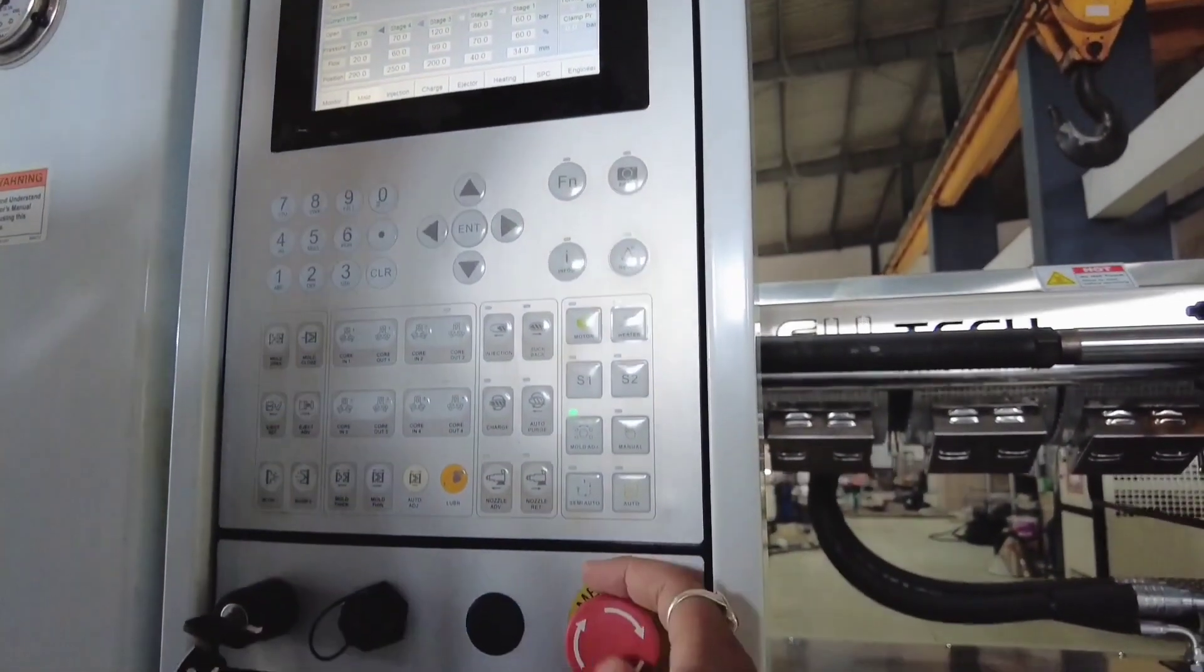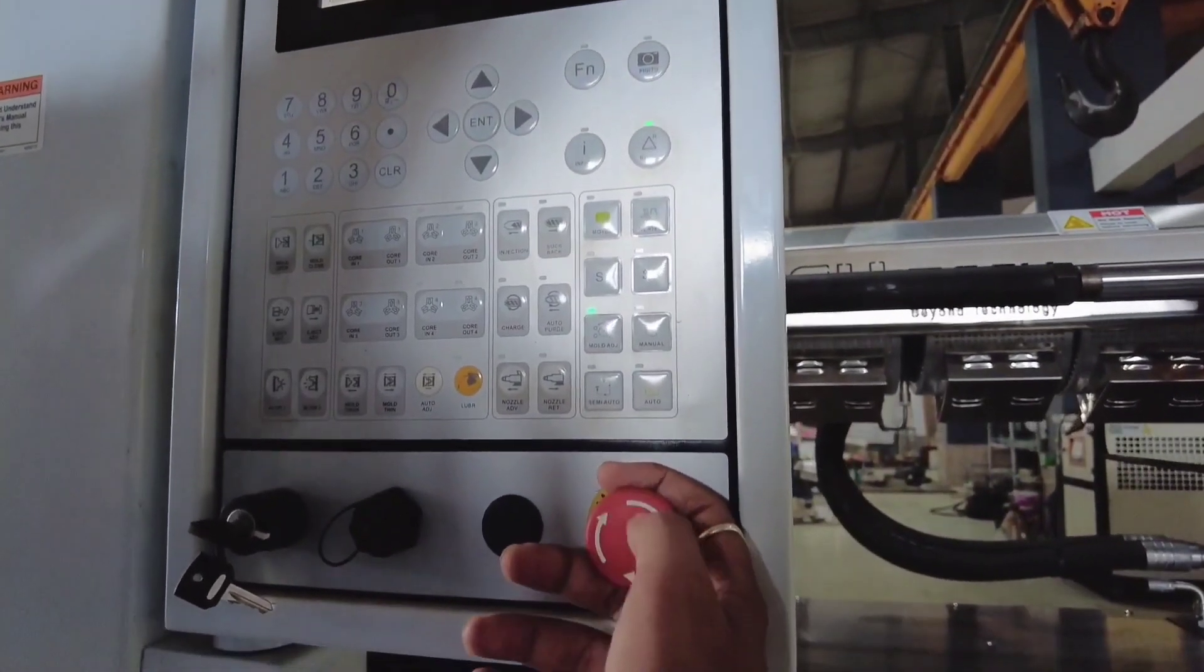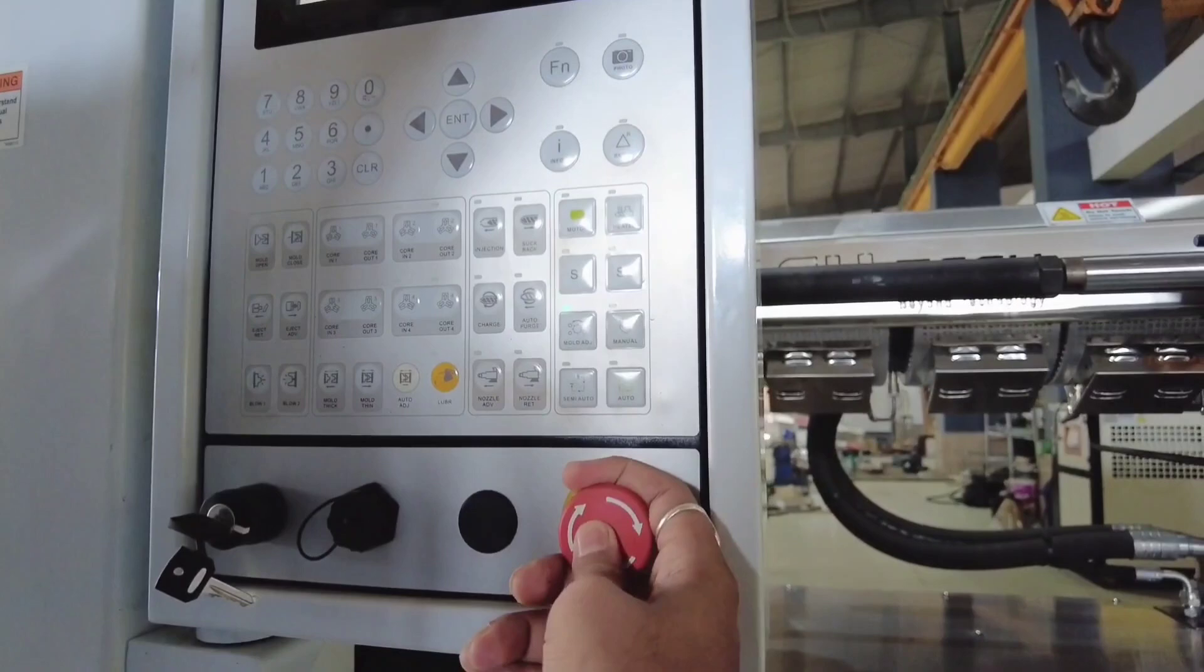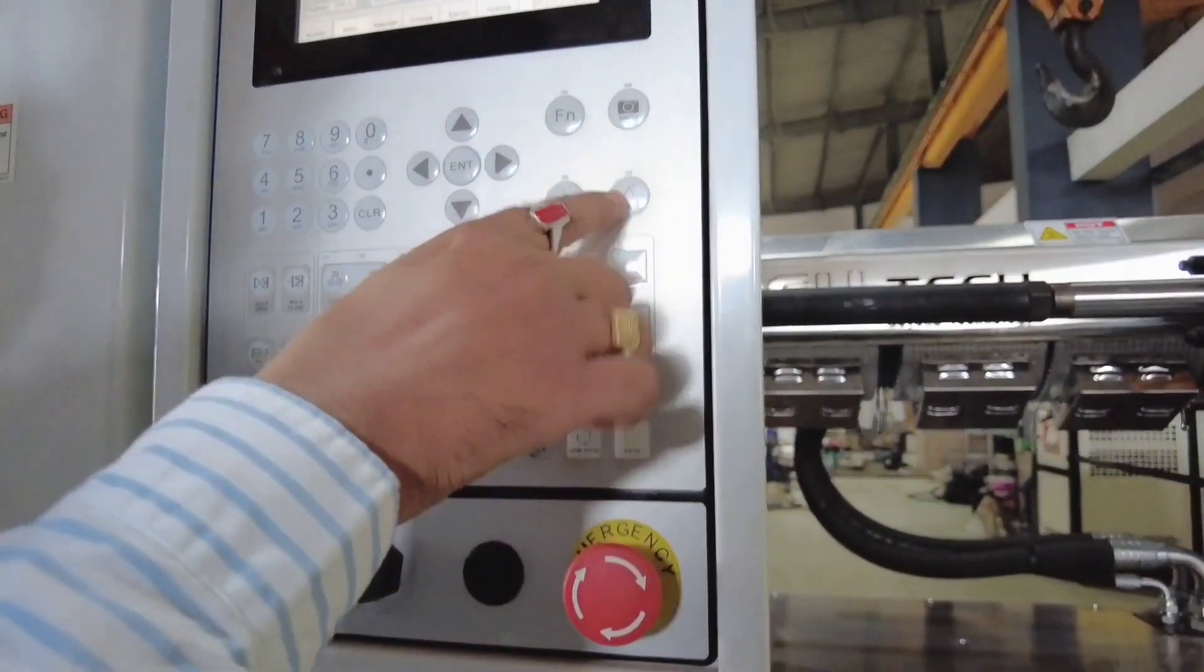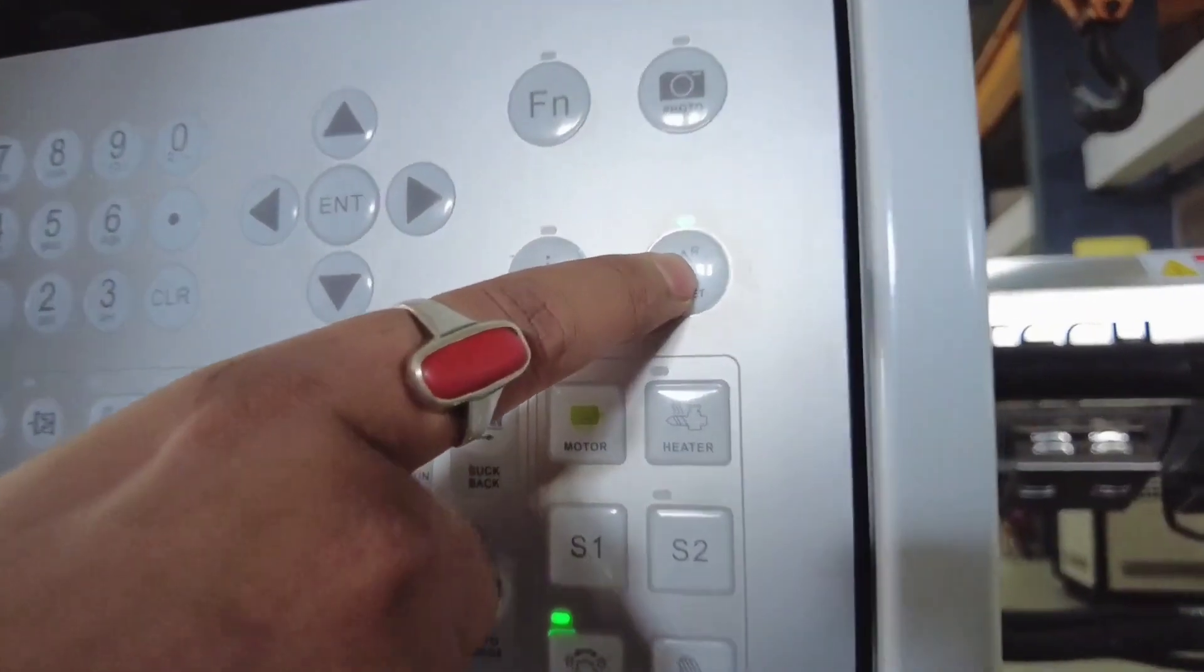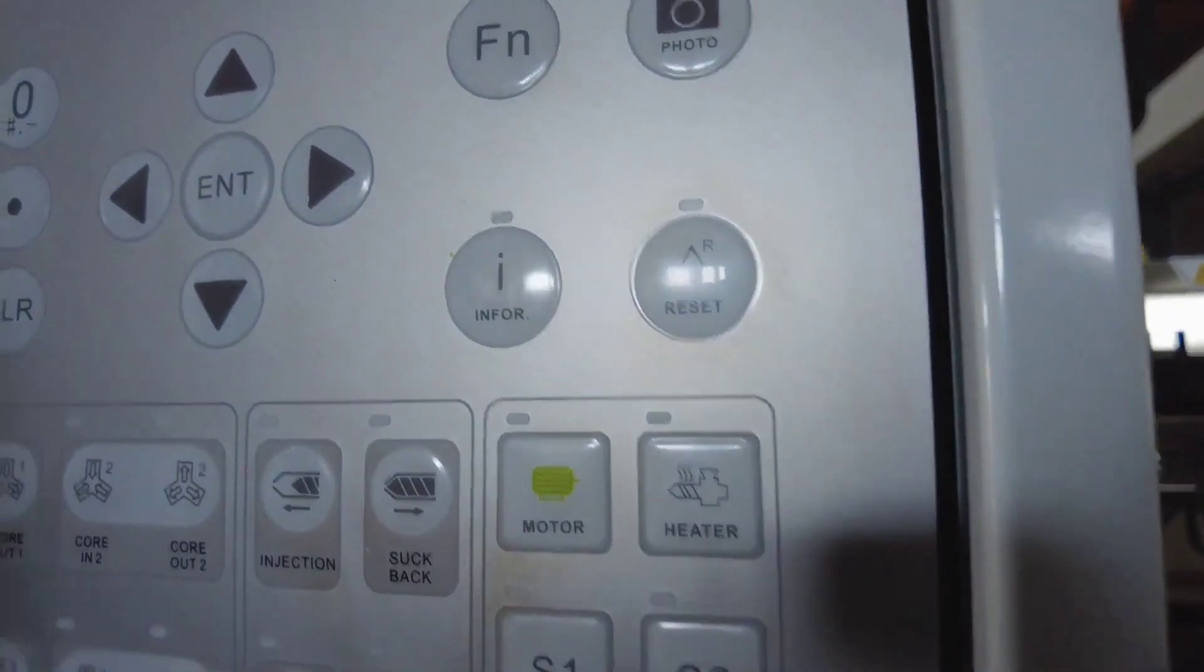By clearing out the alarm you can start again. To clear the alarm you have to pull it like this. When you pull the emergency switch, now you can clear your alarm by pressing this alarm clearing button.